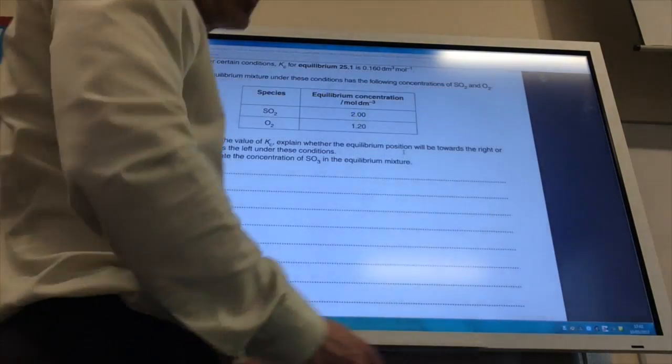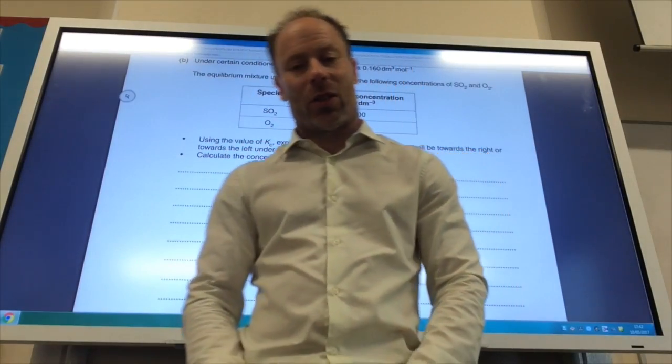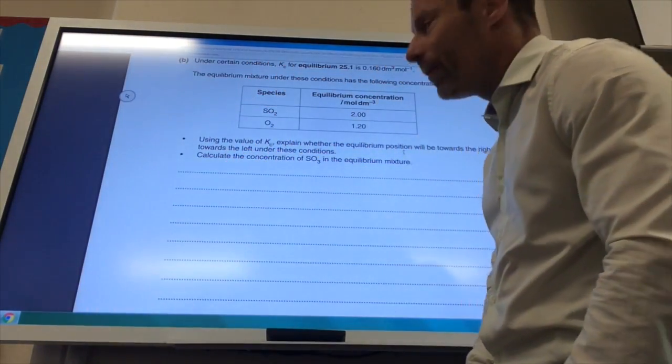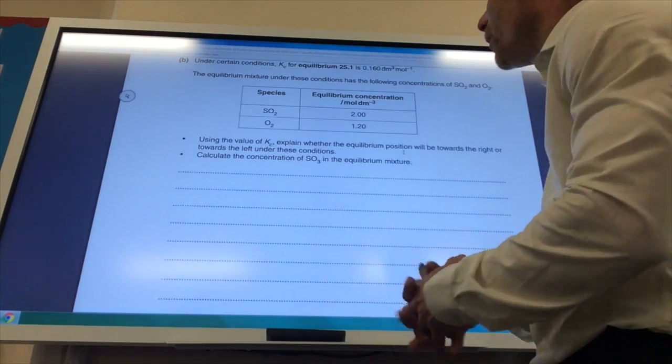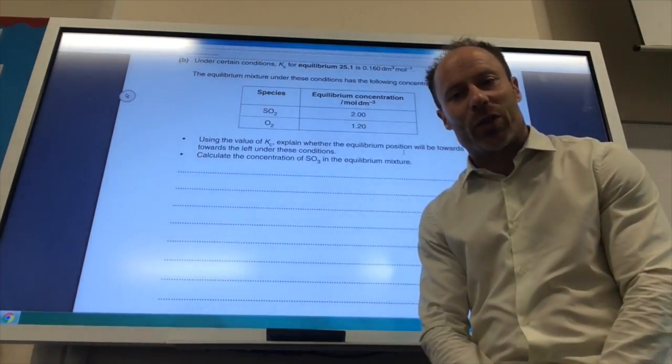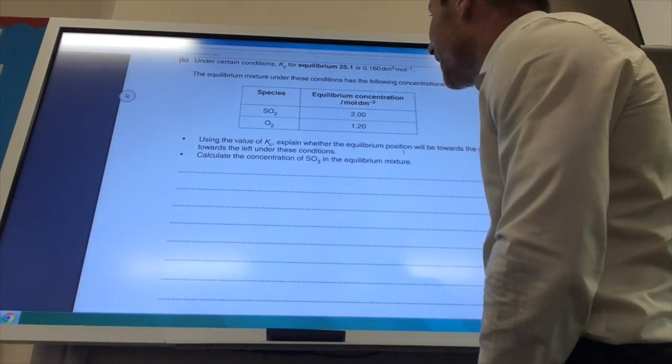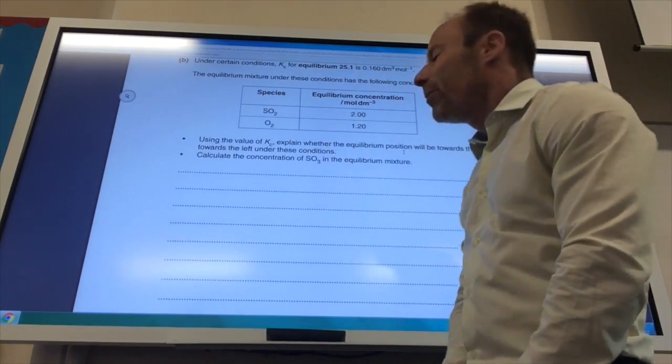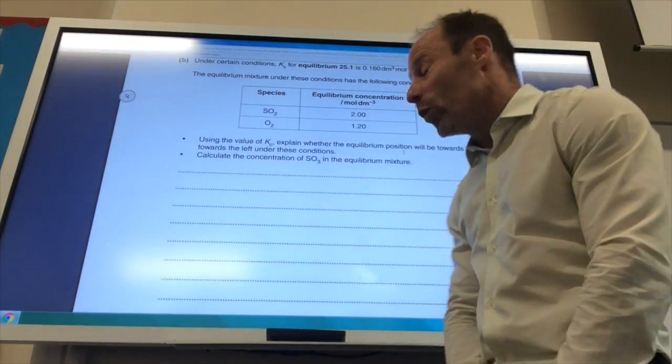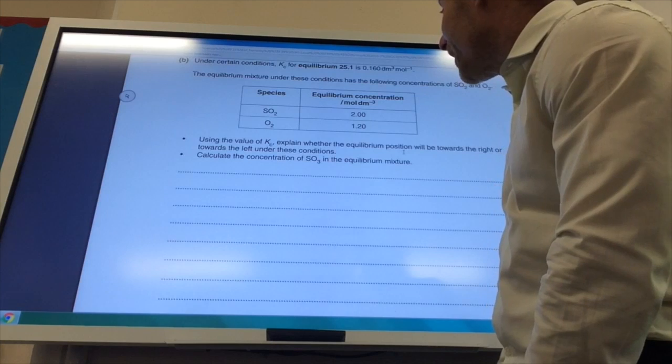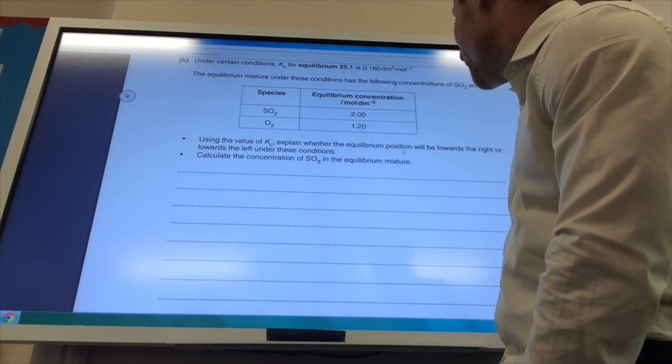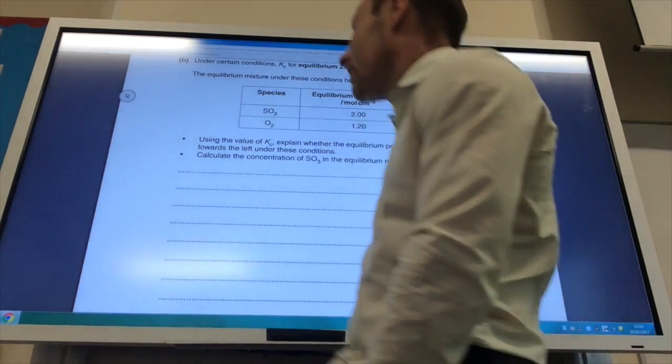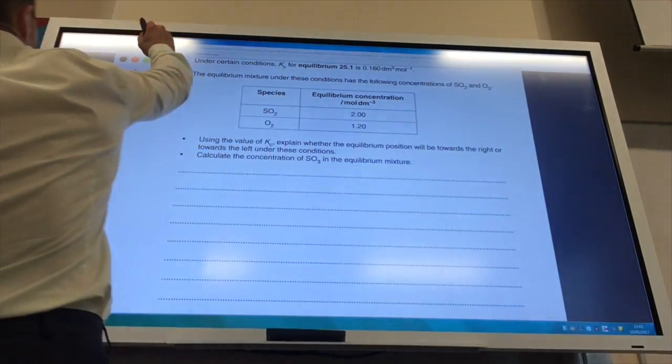Okay, so we're now going to start putting some numbers into our equilibria now. So it's given me the equilibrium concentration of sulfur dioxide and also oxygen. And it's also given me Kc, which is 0.160. So using the value of Kc, explain whether the equilibrium position would be towards the right or towards the left under these conditions.